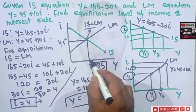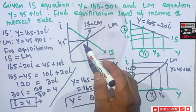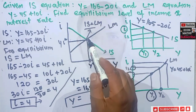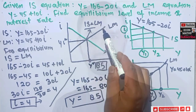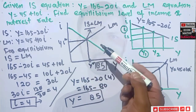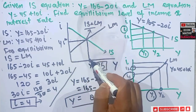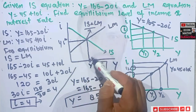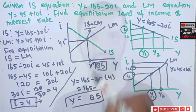The intersection of the IS and LM curves shows us the equilibrium point of rate of interest and level of income, where both the money market and goods market are in equilibrium. I hope that makes things clear — thank you.